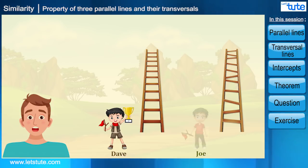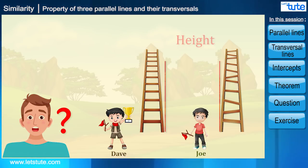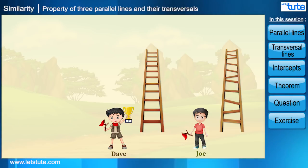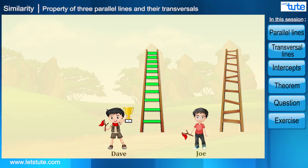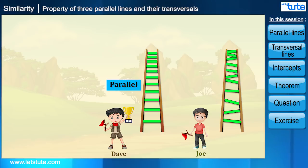But how and why? The height of the ladder was the same and they did start at the same time. Then what must be the reason? Well, your brain just applied mathematics to get the answer. If you see carefully, the steps of Dave's ladder are parallel to each other, whereas the steps of Joe's ladder are not parallel to each other. Therefore Dave easily climbed the steps.